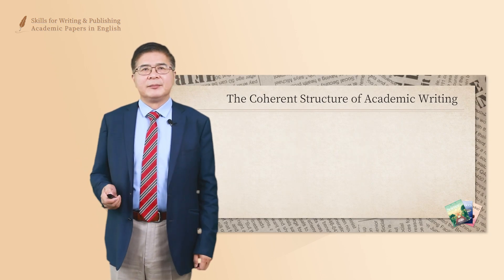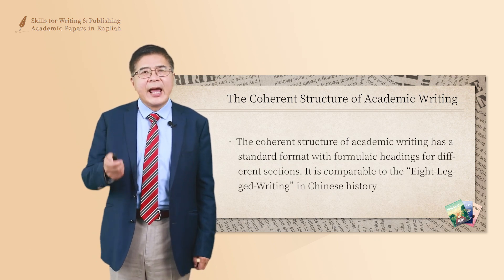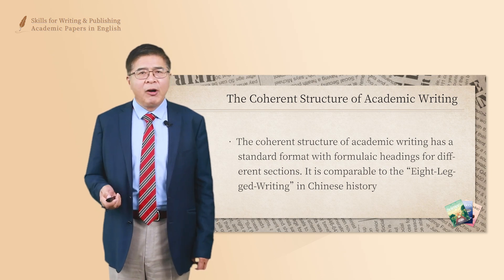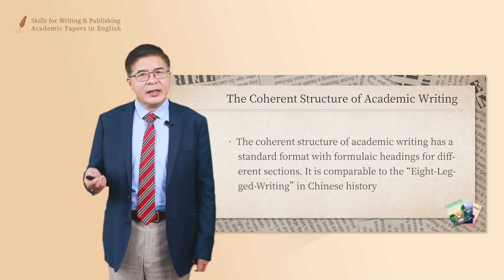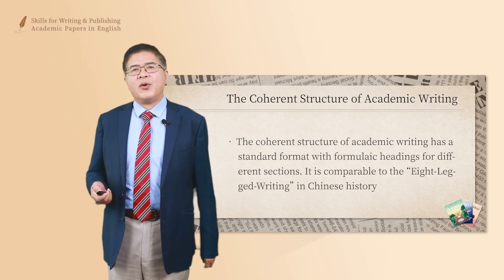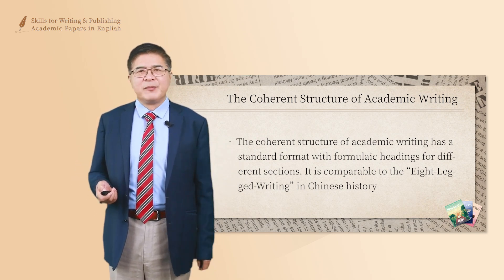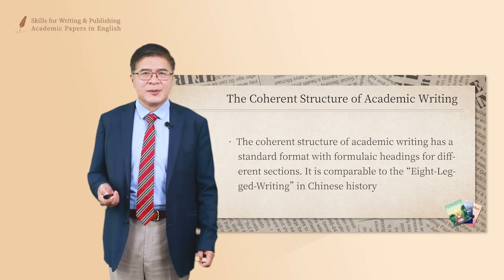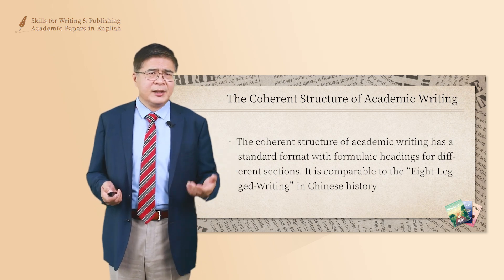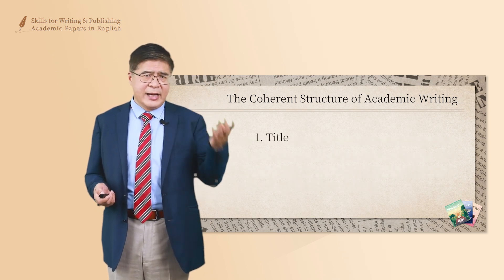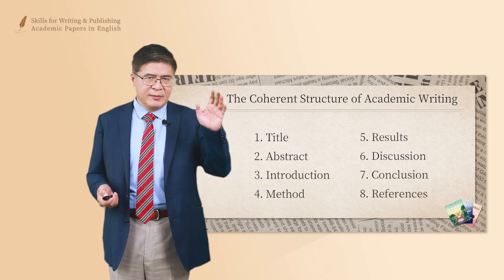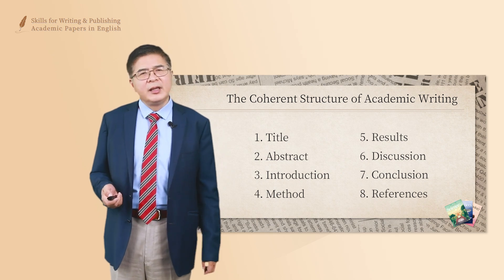Now, let's look at the coherent structure of academic writing. Specifically, the coherent structure of academic writing has a standard format with formulaic headings for different sections, and it's comparable to the eight-legged writing in Chinese history. For the coherent structure of academic writing, what sections does it have? It has a title, abstract, introduction, method, result, discussion, conclusion, and references. So you have to have these eight parts for proper academic writing.